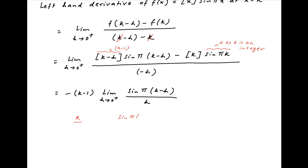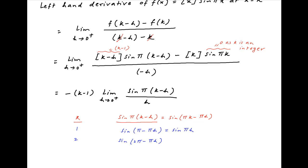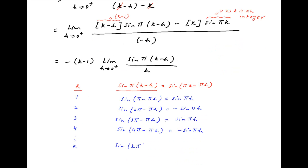Evaluating sin(π(k − h)) for different values of k: when k = 1, it equals sin(π − πh), which is in the second quadrant and equals sin(πh). When k = 2, it equals sin(2π − πh), in the fourth quadrant, equal to −sin(πh). When k = 3, sin(3π − πh) is in the second quadrant, equal to +sin(πh). When k = 4, sin(4π − πh) equals −sin(πh). In general, sin(kπ − πh) = (−1)^(k−1)·sin(πh).